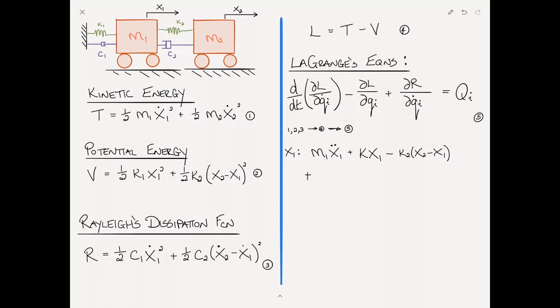Then plus the part from Rayleigh's dissipation function: c1 times x1 dot minus c2 times x2 dot minus x1 dot. Let's put an external force f of t on mass two to make it more general. The first equation has no force because there's no force acting directly on mass one, so this equals zero.